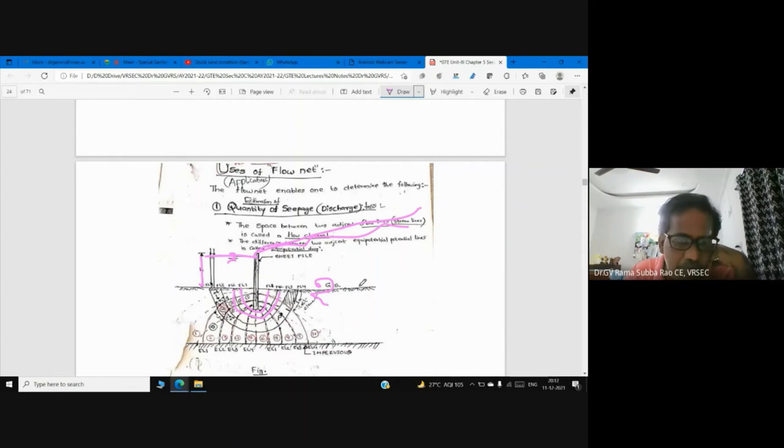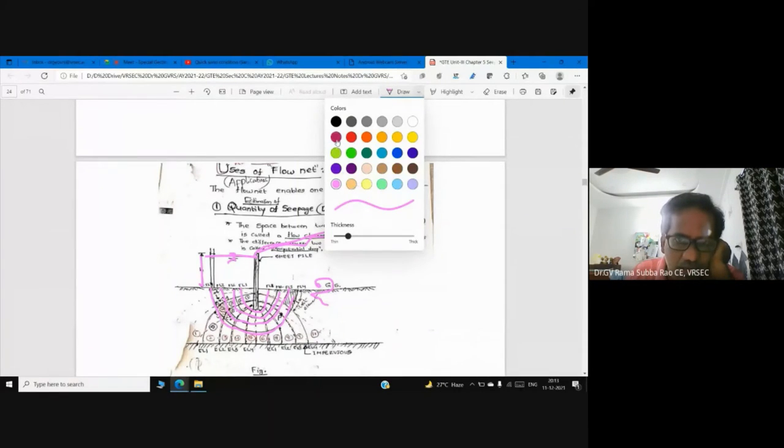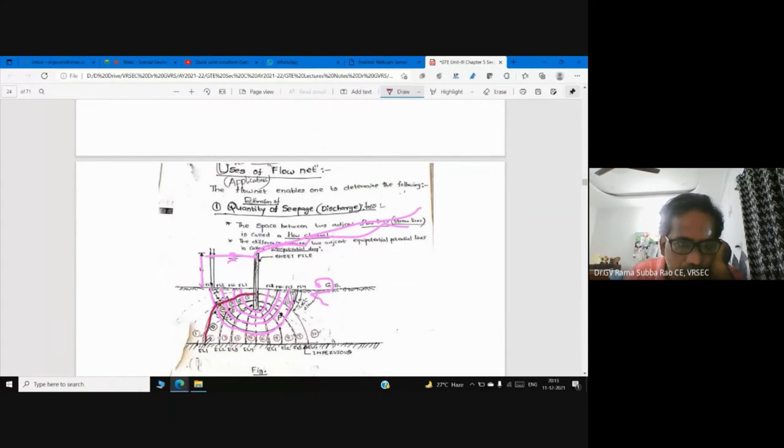These are called cellular cofferdams. They are earth retaining structures. Here we have flow around it - upstream and downstream. These lines are flow lines. I will pick another color. These are smooth curves. These lines are parallel.